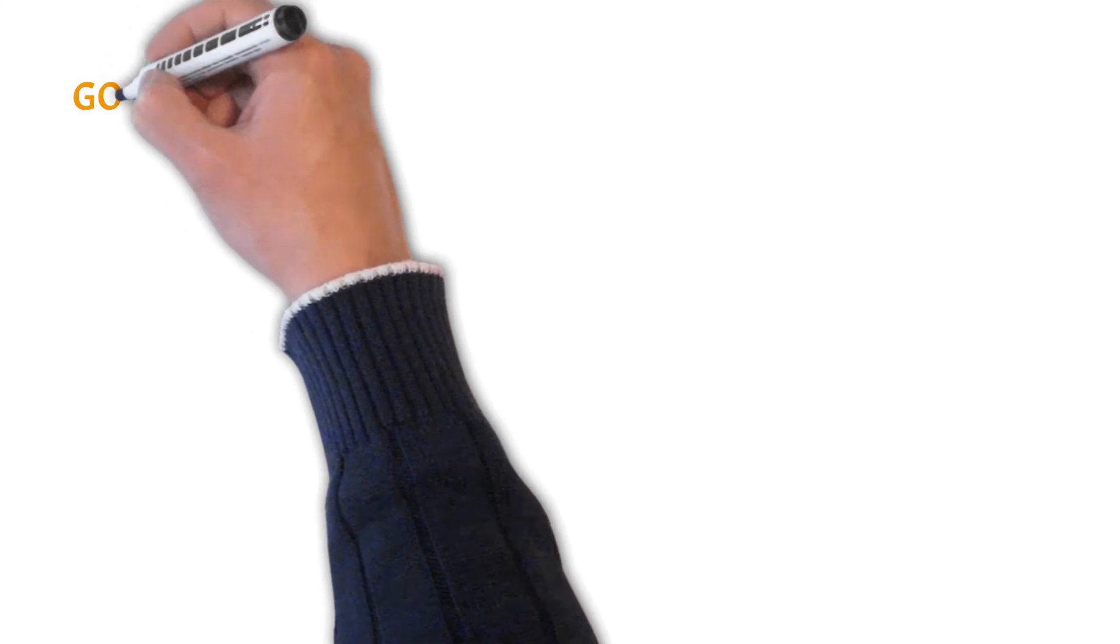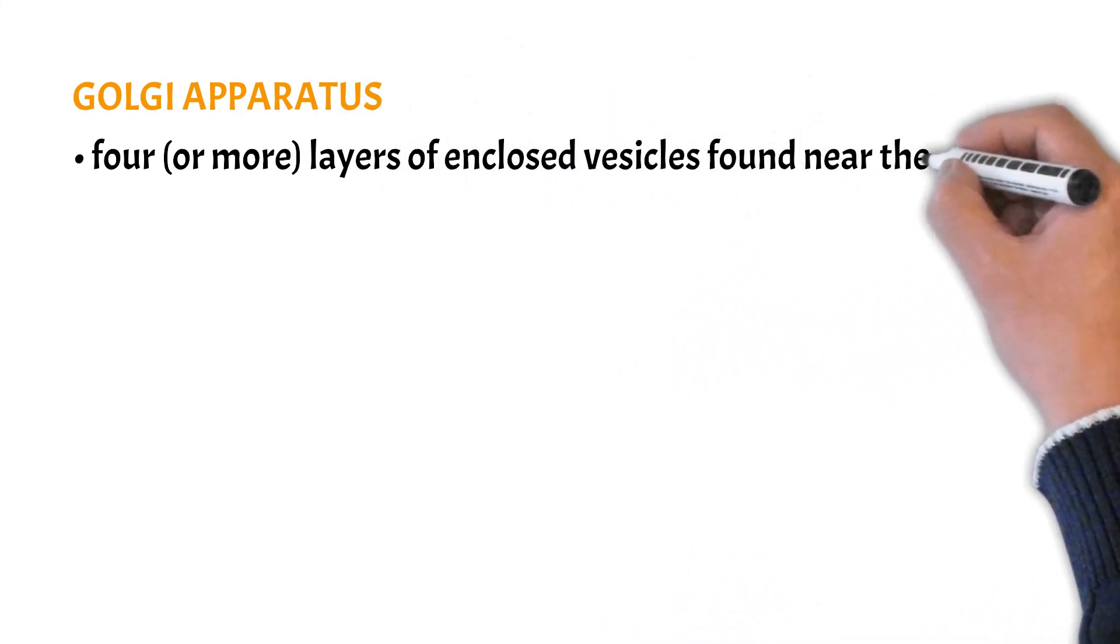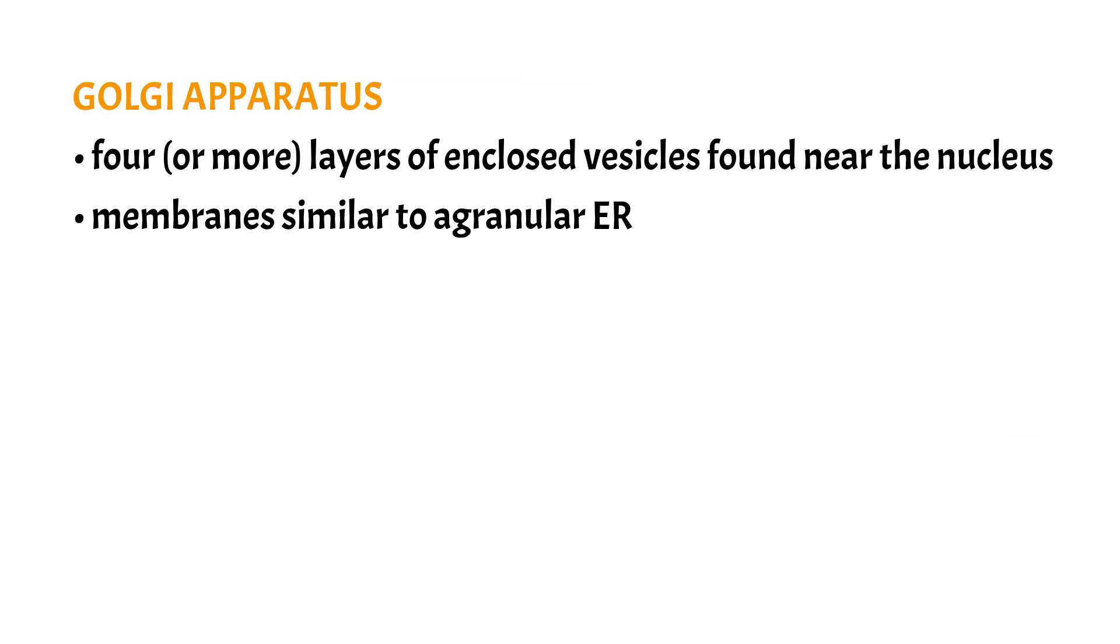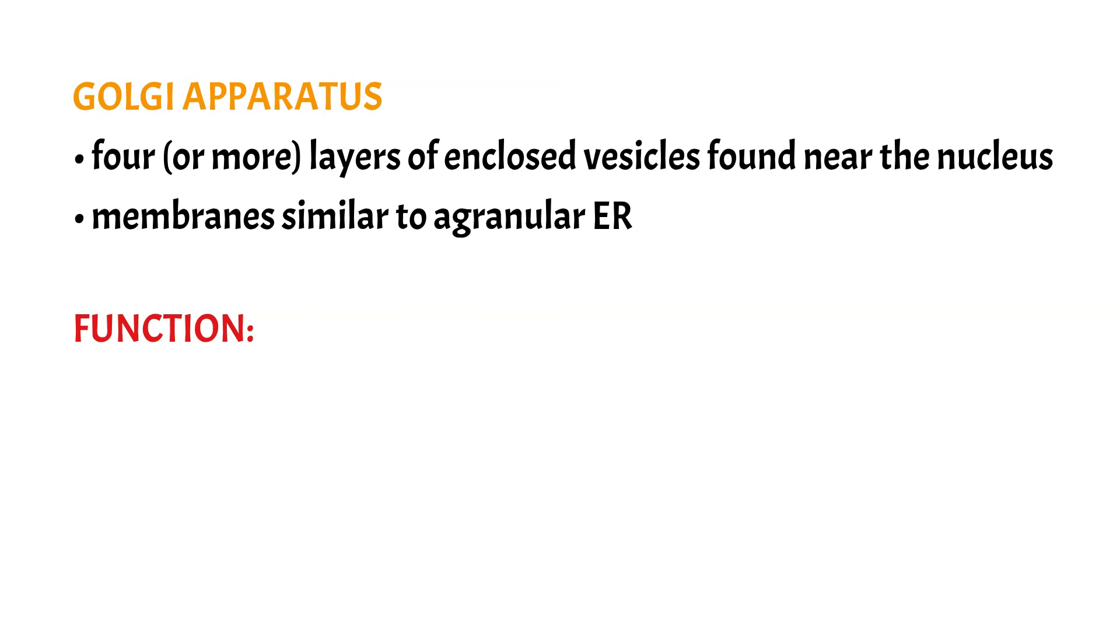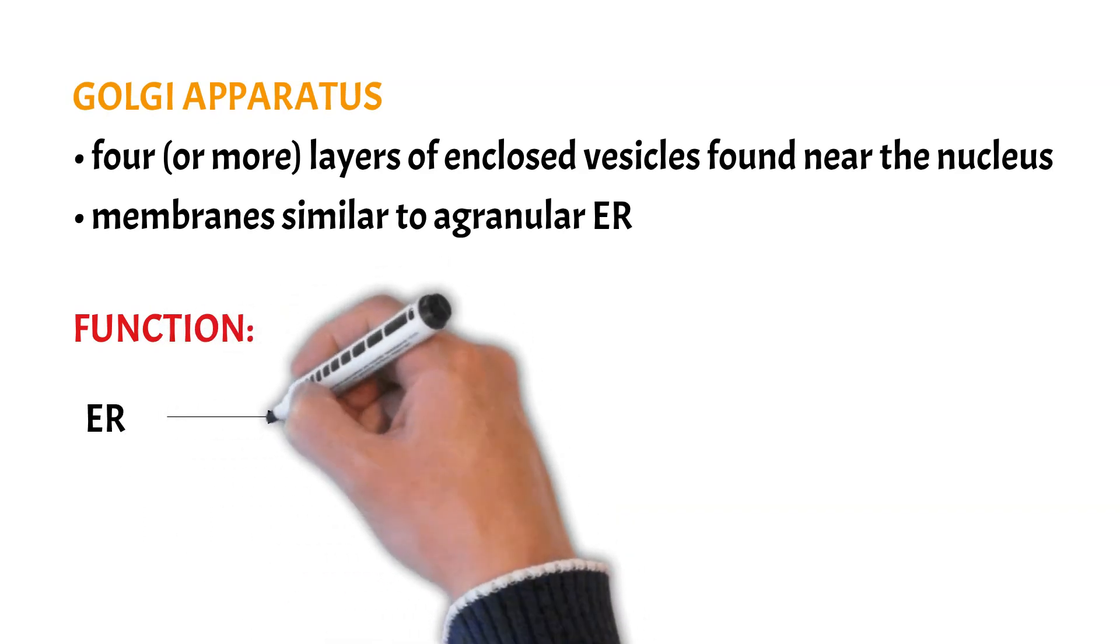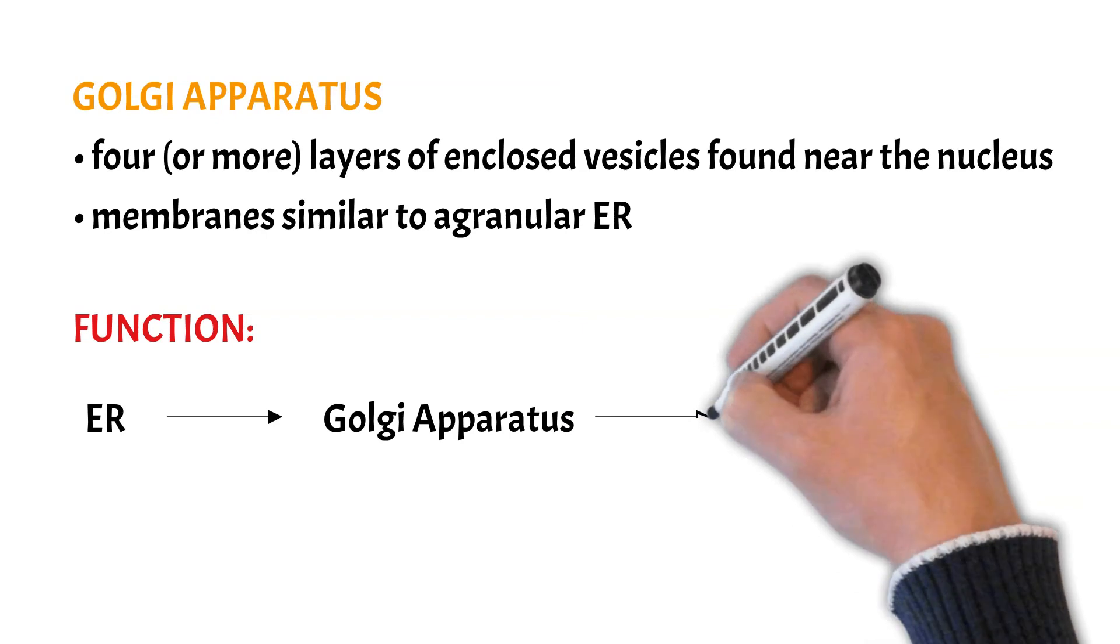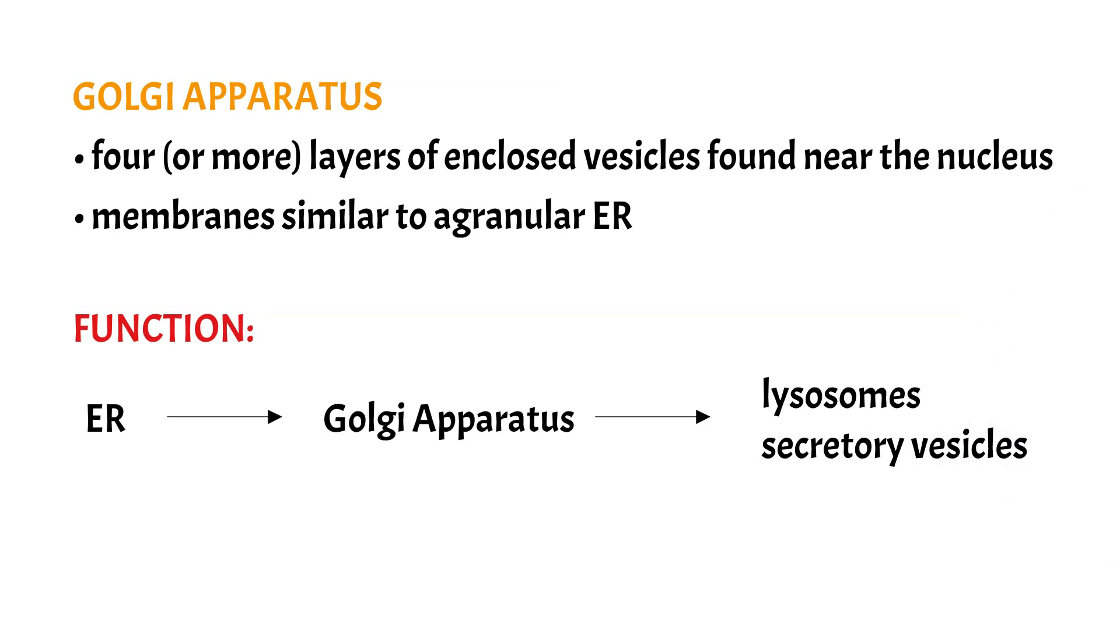Finally, we have the golgi apparatus. It is composed of four or more layers of thin, flat, enclosed vesicles that lie near one side of the nucleus. And it has similar membranes as the agranular endoplasmic reticulum. It works in association with the endoplasmic reticulum and the process is as follows. First, the endoplasmic reticulum vesicles are transported from the endoplasmic reticulum to the golgi apparatus. The golgi apparatus processes them and forms lysosomes, secretory vesicles and other cytoplasmic components.